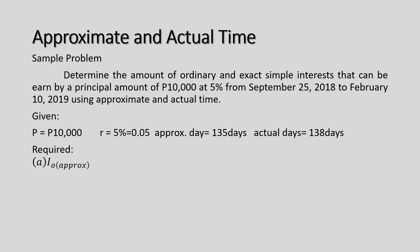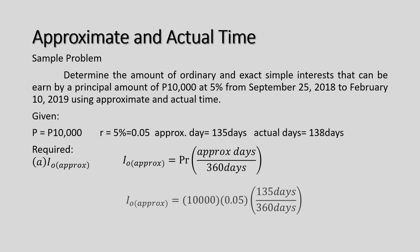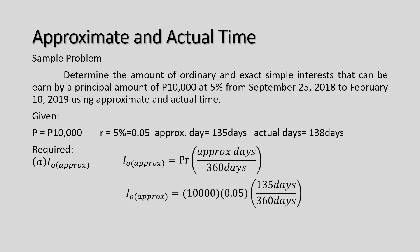For letter A — ordinary simple interest using approximate time — the formula is P times R times the approximate number of days divided by 360. Substituting: P10,000 times 0.05 times 135 days divided by 360 days gives an ordinary simple interest of P187.50.